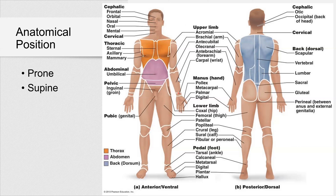Moving to the upper limb: we have acromial, brachial, antecubital, antibrachial, carpal, and then the manus or hand, which includes pollex (your thumb), the palmar region, and the digital region (your fingers). On the posterior view, acromial, brachial, and antibrachial are the same — you can say anterior or posterior brachial to distinguish. Where we have antecubital on the front, we have olecranal on the back. We have carpal on the front and metacarpal on the dorsal side. Pollex and digital regions are the same.